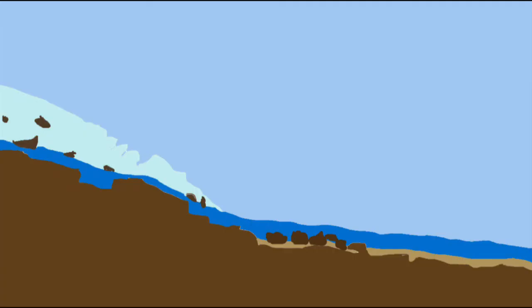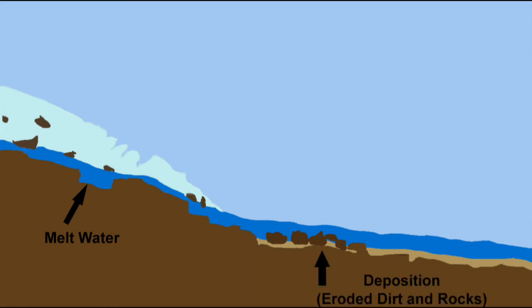The water that flows under the glacier is called melt water. Melt water causes deposition, which is the dropping of the eroded dirt and rocks.